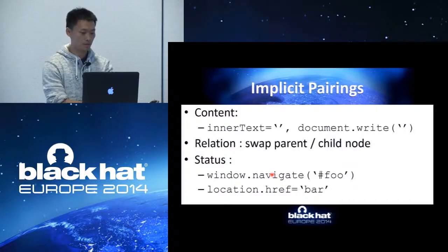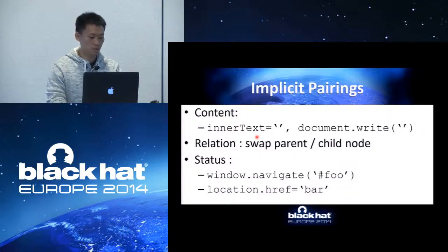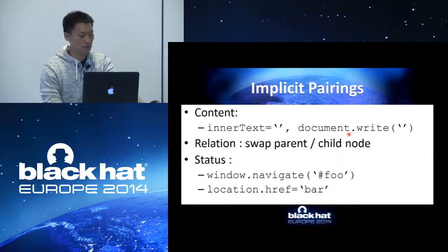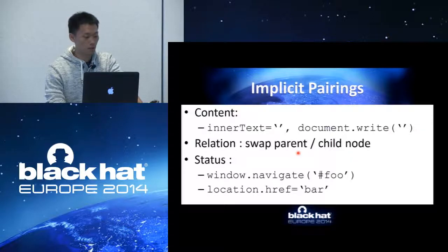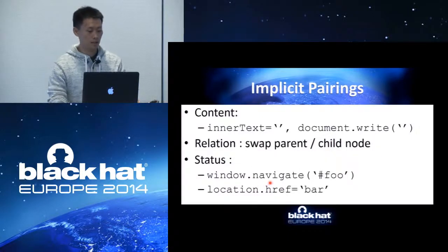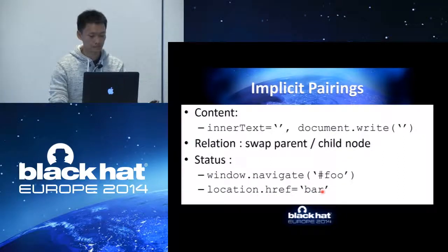Now let's talk about implicit pairing. Implicit pairing means we try to manipulate something that is not a property, method, or attribute, but is very important for a page — something like content. We can manipulate content through innerHTML or through document.write with an empty string. Another implicit pairing is manipulating DOM relationships: swapping parent and child nodes, appending a node, applying an element, removing a child. Or we can change the web page status by navigating from page A to page B using window.navigate with a URL, or through location.href referencing another page.